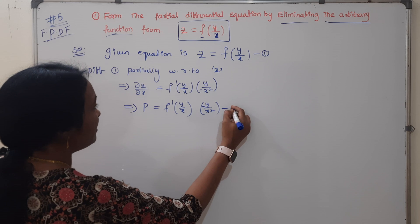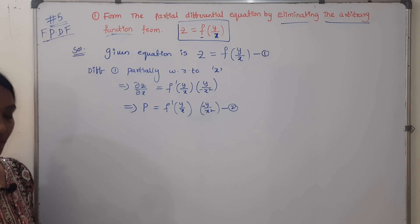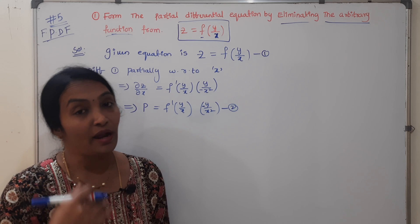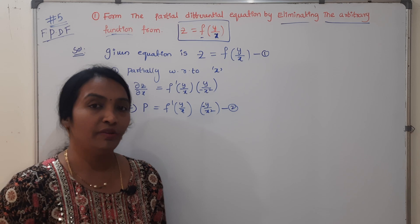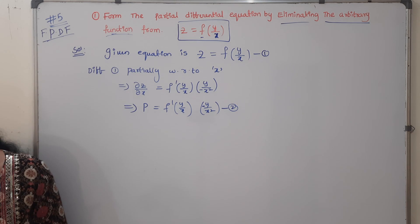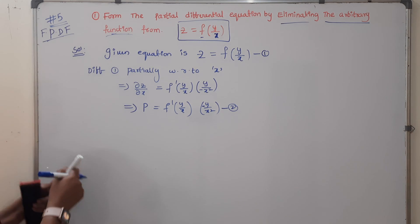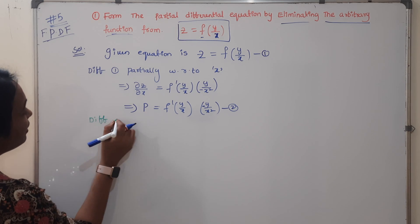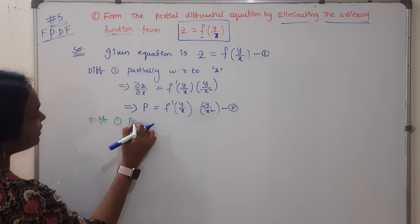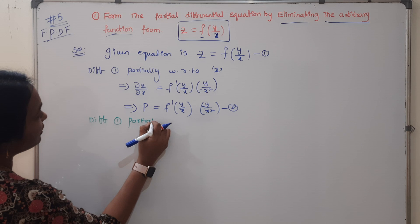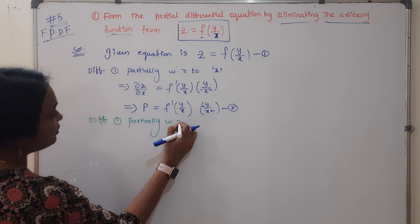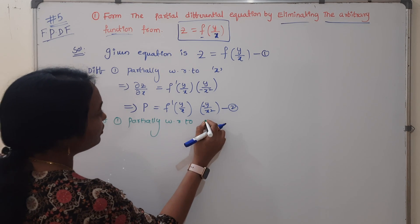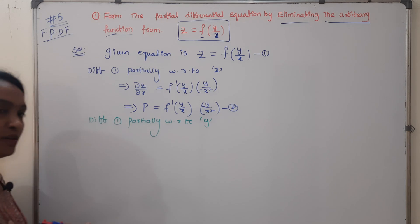This result is equation 1. Now under the independent variable, differentiate equation 1 partially with respect to Y.